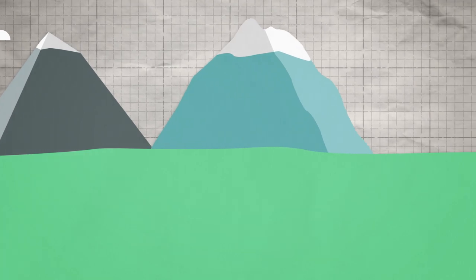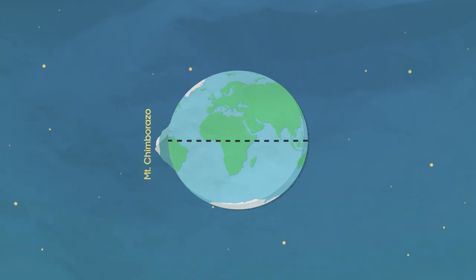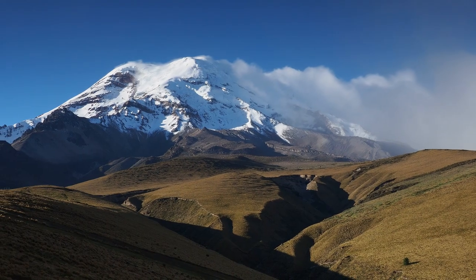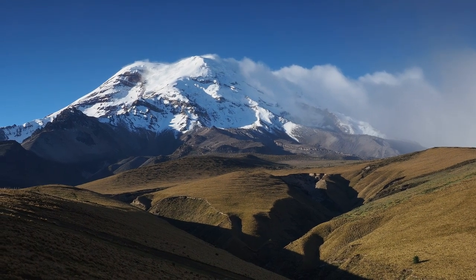Mount Chimborazo gets a massive height boost from the Earth's imperfect shape, thanks to being only about one degree from the equator. This means it's more than 2,000 metres further away from the centre of the Earth than Everest.